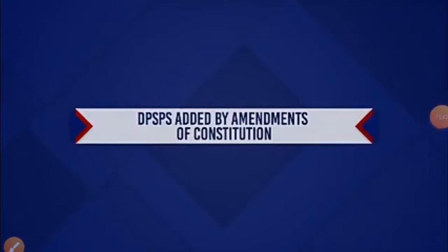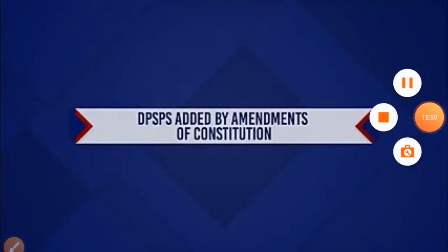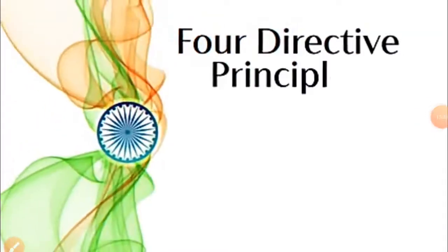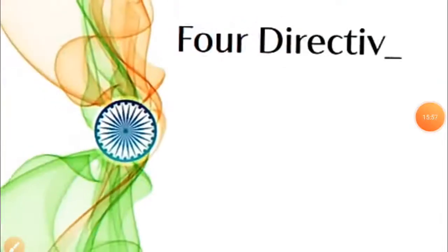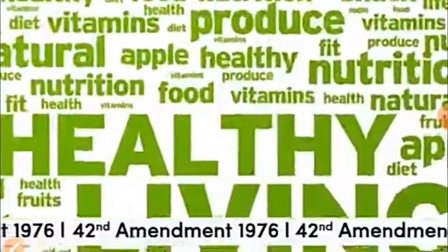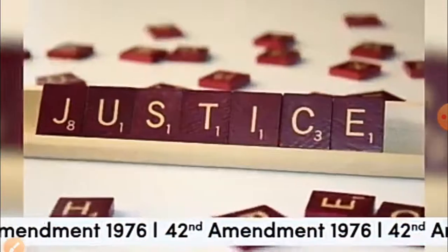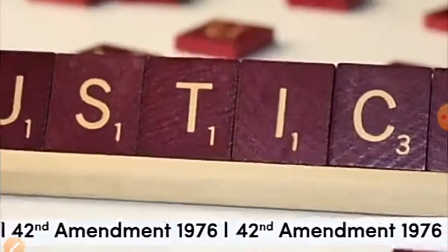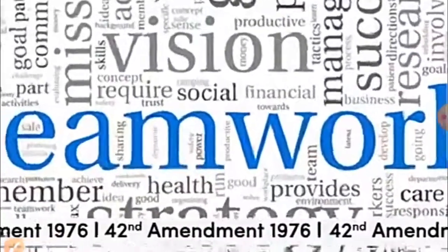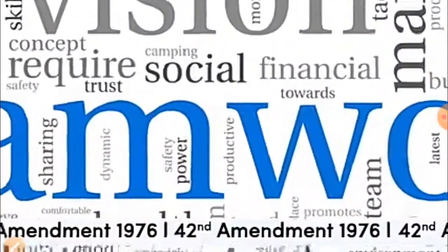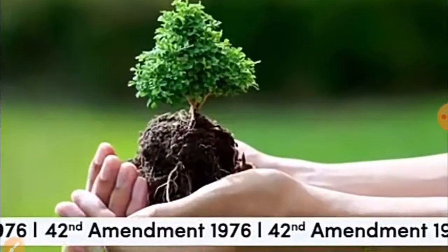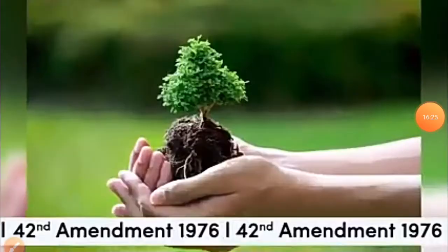Next, we will see the Directive Principles of State Policy added by Amendments of the Constitution. Four Directive Principles were added by the 42nd Amendment: to secure opportunities for healthy development of children under Article 39; to promote equal justice and provide free legal aid to the poor under Article 39A; to take steps to secure the participation of workers in management of industries under Article 43A; and to protect and improve the environment and to safeguard the forests and animals under Article 48A.